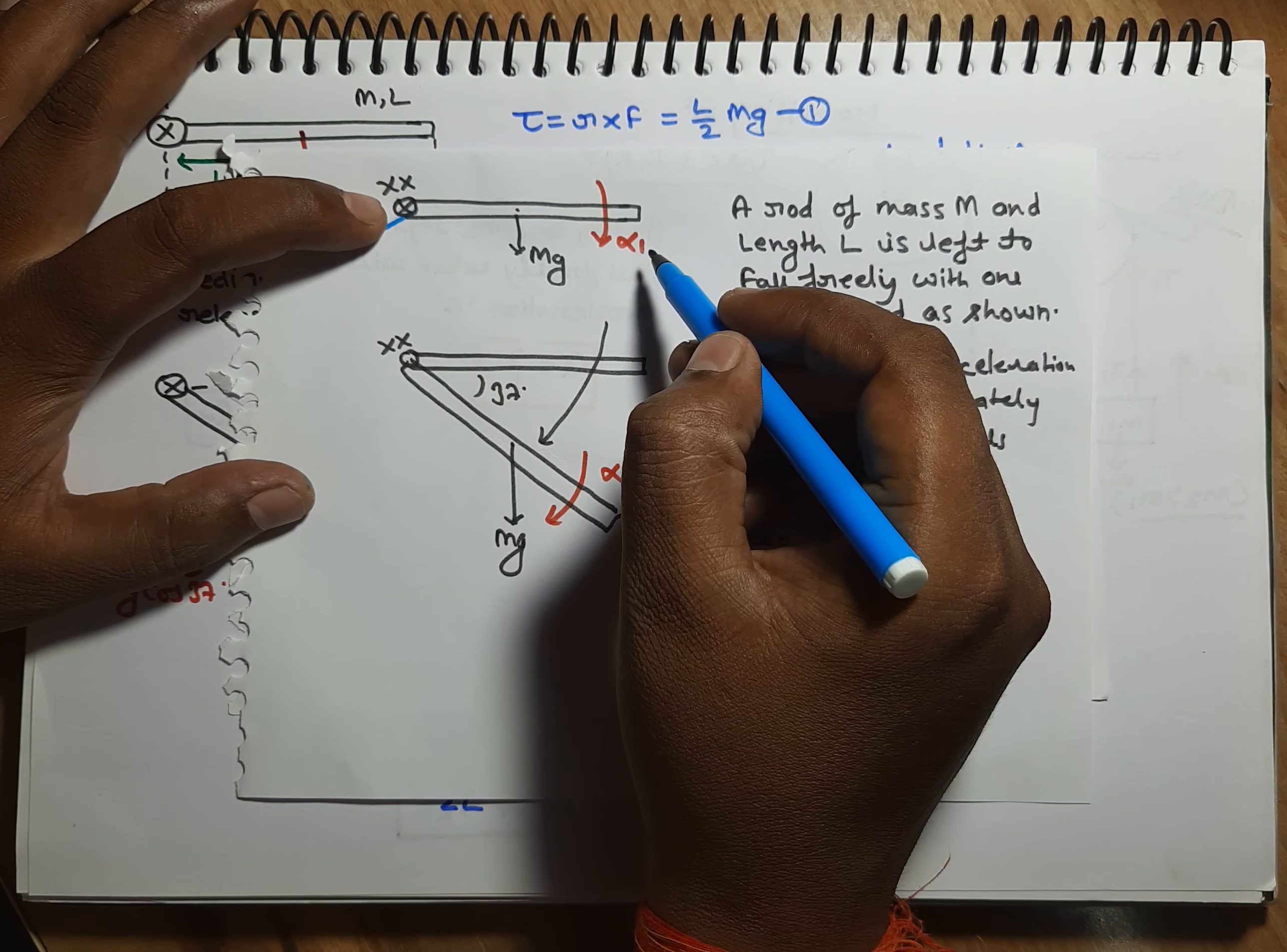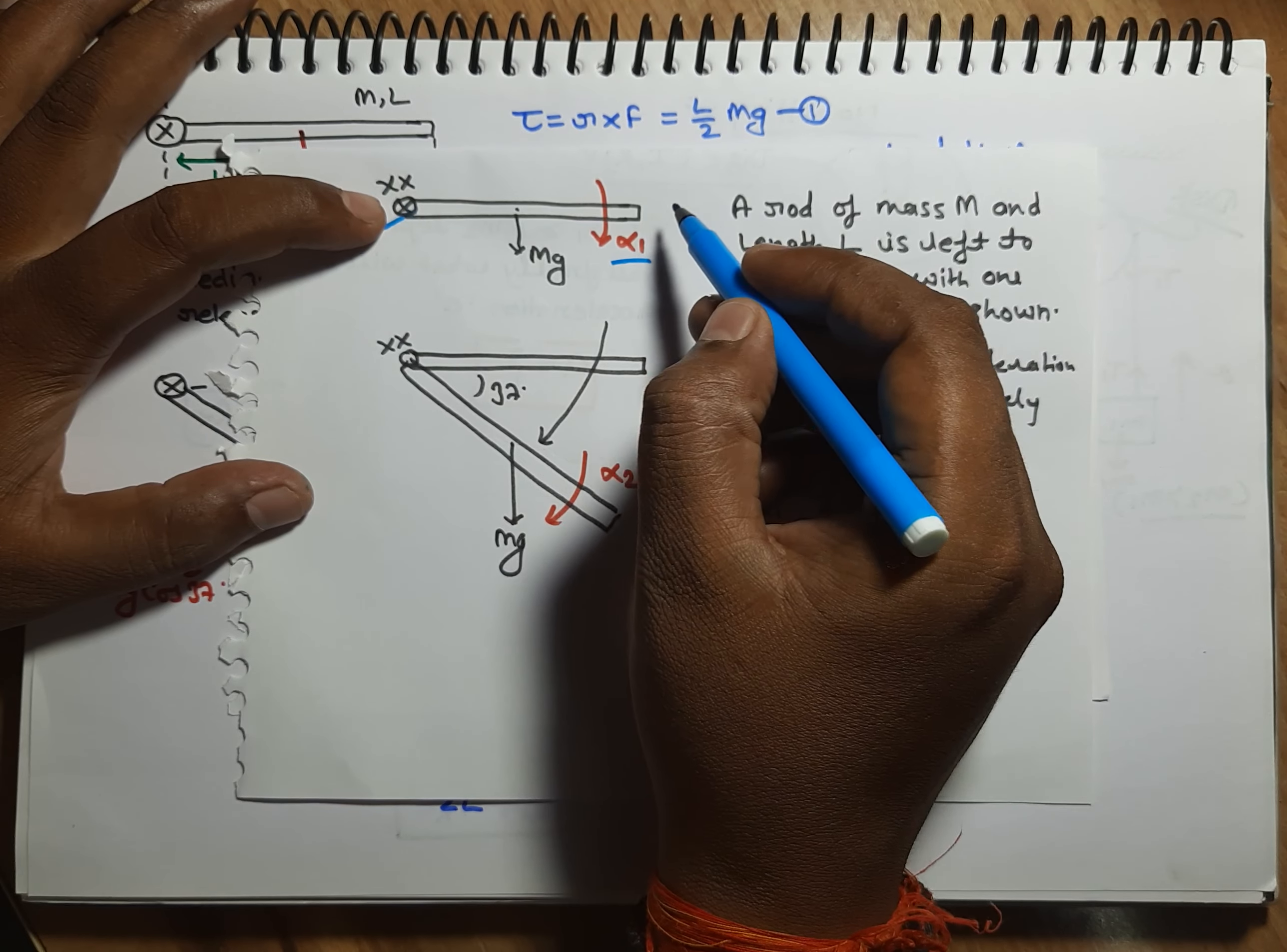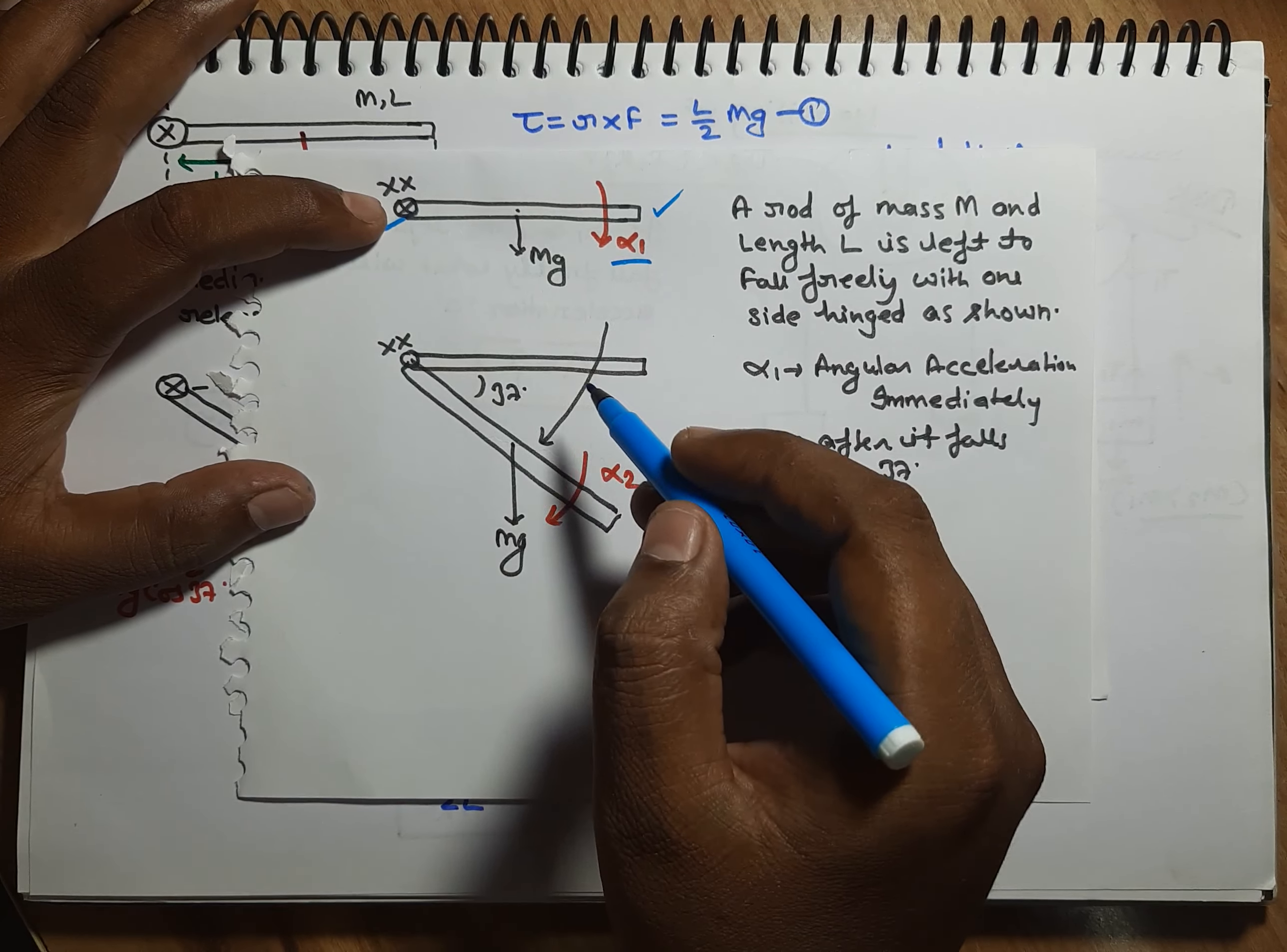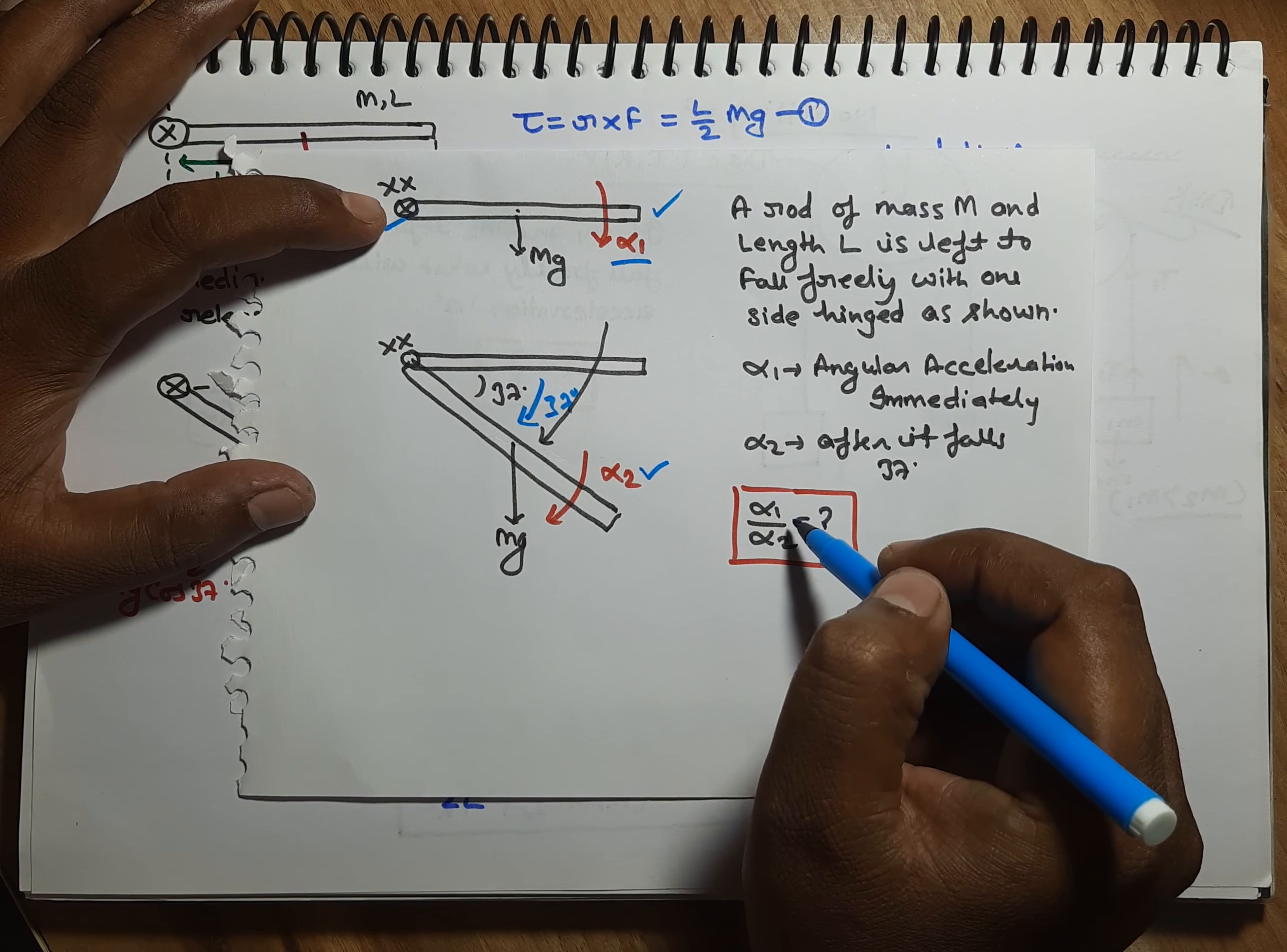Friends, we have said that α₁ is angular acceleration just immediately after leaving this end. α₂ is angular acceleration when it has traveled a 37 degree angle. So friends, we have asked what will be the ratio of α₁ and α₂?